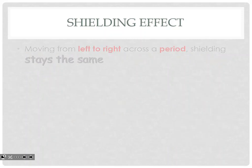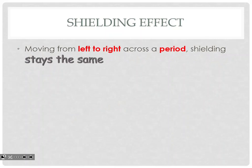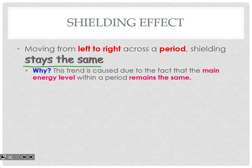How does the trend work? Moving left to right across the period, shielding stays the same. We noticed that also in our intro, where when we graphed it, it was just a straight line across the period, because they all are in the same main energy level. This trend is caused due to the fact that the main energy level within the period remains the same.